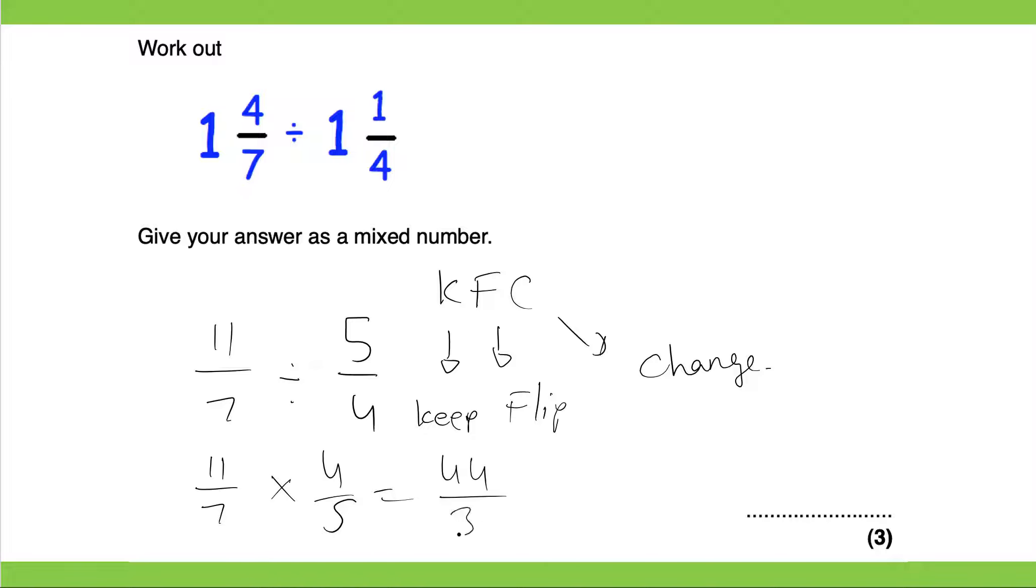That will give us 44 over 5. And it says give your answer as a mixed number. So it would be 1 and a remainder of 5, 9 over 5. And that would be our final answer.